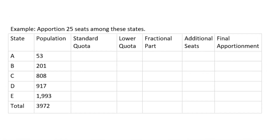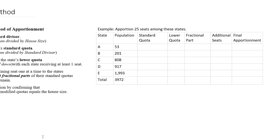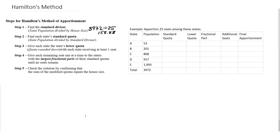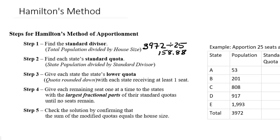Let's begin with this example. We're going to apportion 25 seats among states based on their populations. Step one: we find the standard divisor. We divide the total population, 3,972, by the 25 seats, which is the house size, giving us 158.88. That means there are 158.88 people represented by each seat in our house of representatives, parliament, or whatever the case may be.